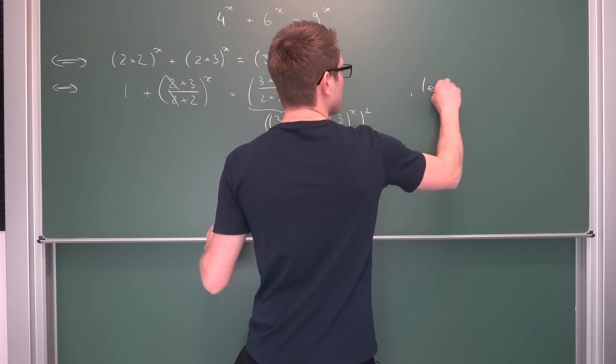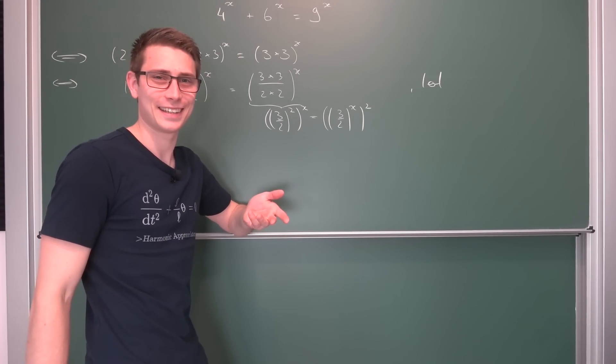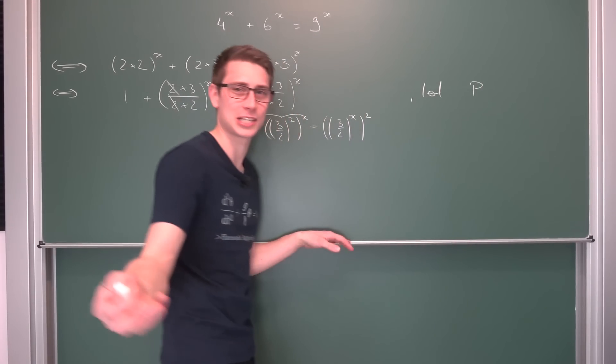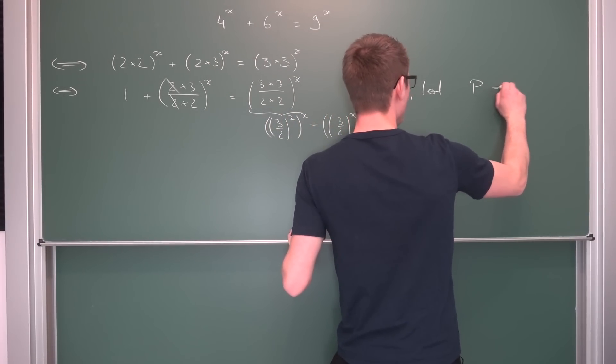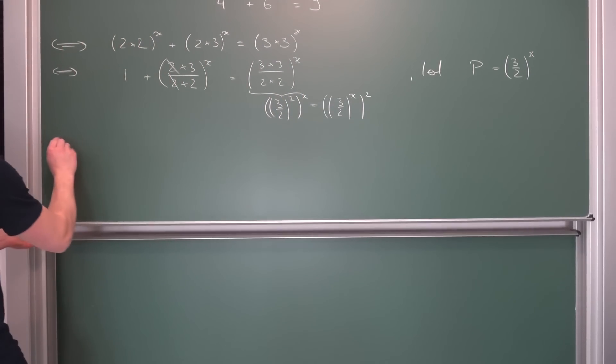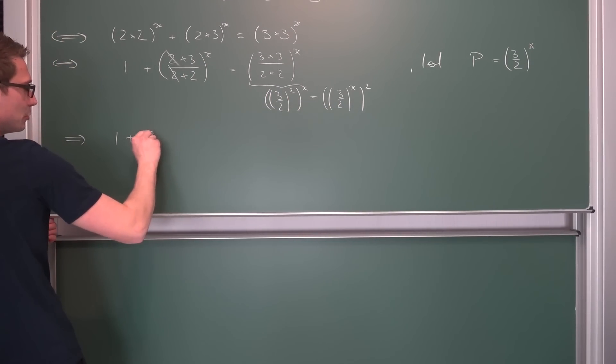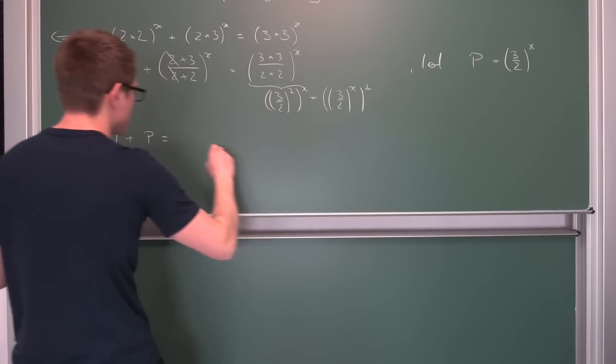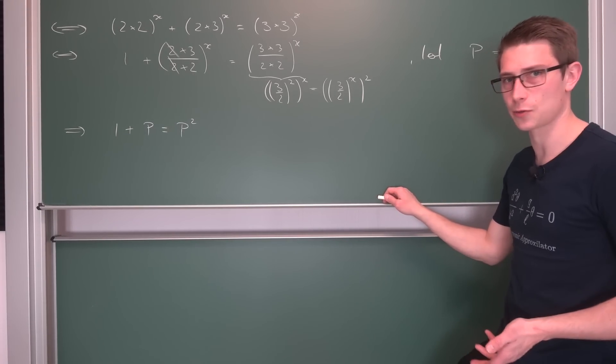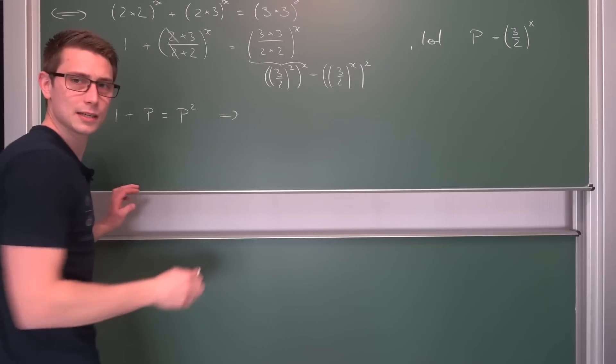Because by exponentiation rules we can turn this into 3 over 2 to the 2x power. And then we can drag the square to the outside turning this into 3 over 2 to the x power and the whole thing squared. Meaning, if we now say, let capital rho be equal to 3 over 2 to the x power. Well, this way we are going to get a polynomial. Namely, 1 plus rho is equal to rho squared. And now we can just start solving a polynomial. This time it's only a second degree polynomial, not a third degree polynomial. This makes matters a bit easier.